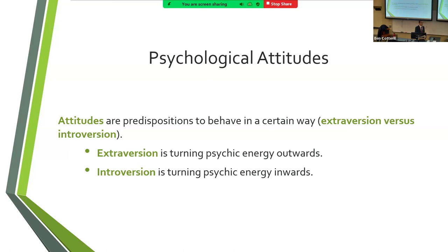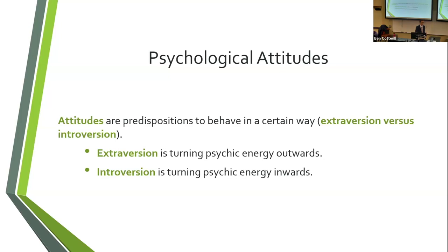Good morning everyone. Continuing on with Jung's theory, this is probably the parts of the theory that you're more familiar with, certainly the parts that are more well known. Extroversion and introversion are pretty well-used concepts. The ideas behind them really go back to the ancient Greeks, but it's Jung who's given credit for coining these terms and adding them to the psychological literature.